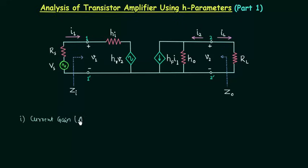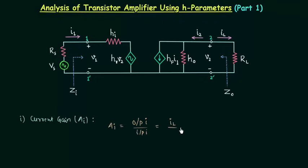Current gain is represented by A subscript I and the current gain is equal to the ratio of output current to the input current. The output current is IL and the input current is I1, so the current gain is equal to IL by I1. IL is equal to I2 because the direction of I2 is opposite to the direction of IL, so we can also write the current gain as minus I2 by I1.